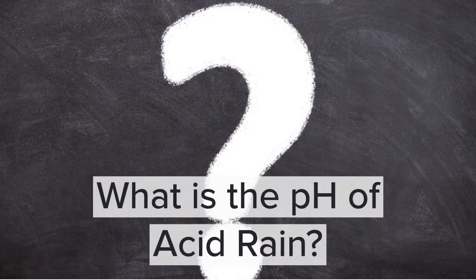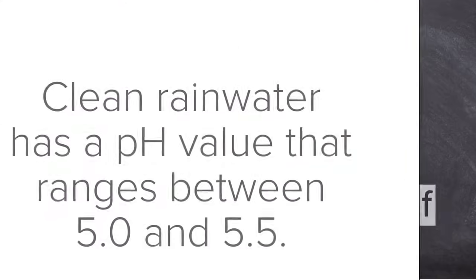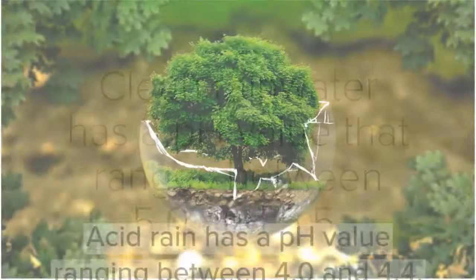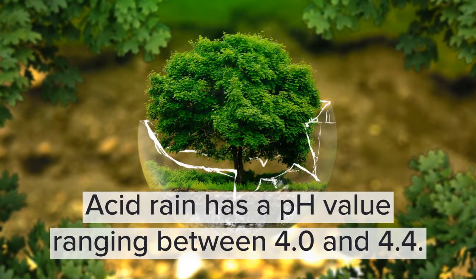What is the pH of acid rain? Clean rainwater has a pH value that ranges between 5.0 and 5.5. This makes it somewhat acidic, but not acidic enough to cause harm to the environment.